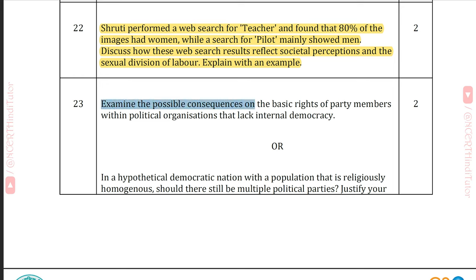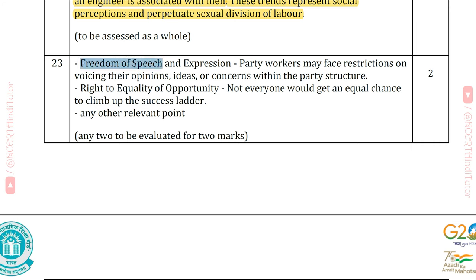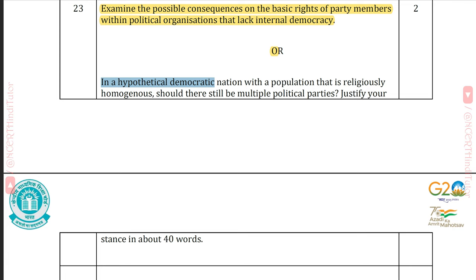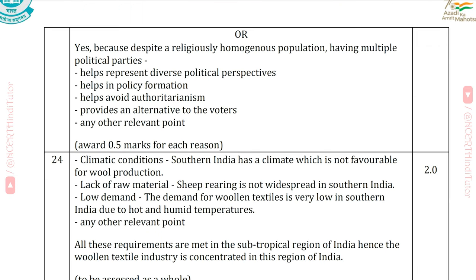Question 23: Examine the possible consequences on the basic rights of party members within political organizations that lack internal democracy. Answer: Freedom of speech and expression — party workers may face restrictions on voicing their opinions, ideas or concerns. Right to equality of opportunity — not everyone would get an equal chance to climb the success ladder. Alternatively: In a hypothetical democratic nation with a religiously homogeneous population, should there still be multiple political parties? Answer: Yes, because multiple parties help represent diverse political perspectives, assist in policy formation, avoid authoritarianism, and provide voters with alternatives.